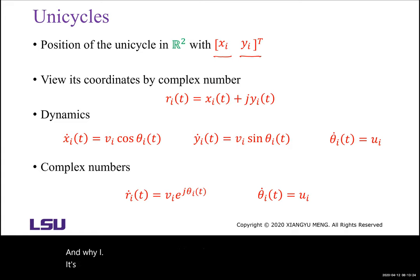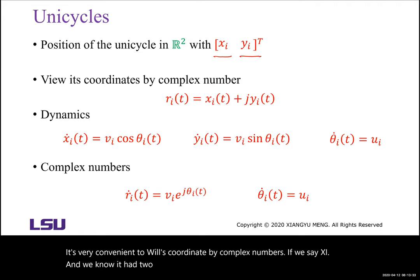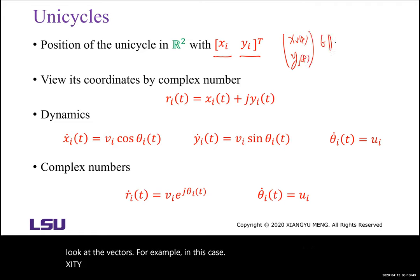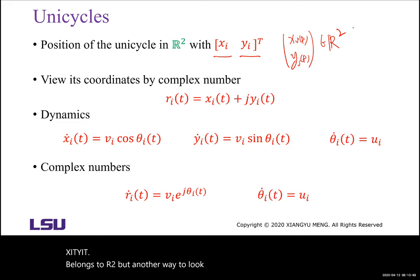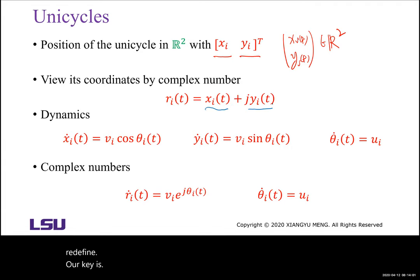It's very convenient to view the coordinate using complex numbers. We know there are two ways to look at the position. We can use vectors — for example, (xi, yi, t) belonging to R2. But another way, we can use complex numbers. We define R(t) as xi(t) plus j times yi(t).